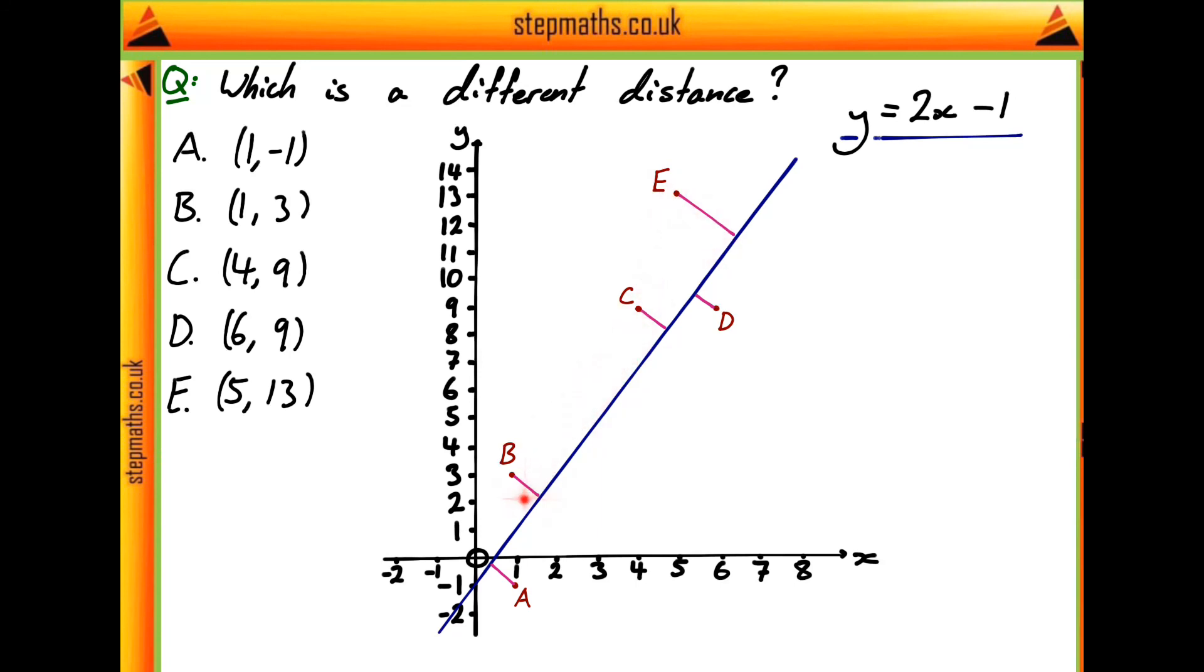And if we look down, then we can see that, roughly speaking, all of these points, A, B, C, and D, are about the same distance from a line, or at least they look fairly similar from our diagram. But E seems quite noticeably longer, and so this is just going to be enough evidence to say that E is going to be the point which is furthest away from them, and is a different distance from the line compared to the other points.